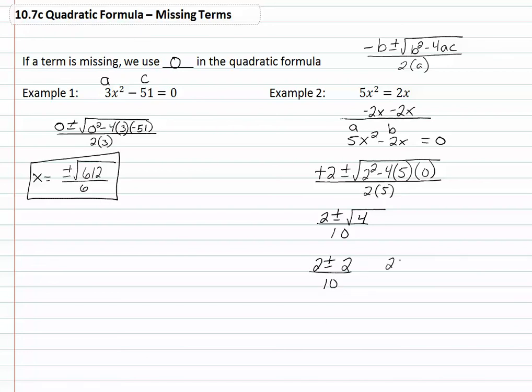So we have two plus two over ten, which gives us four tenths, which will simplify down to two fifths.